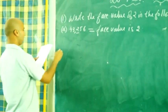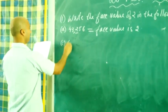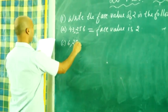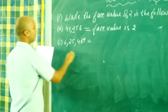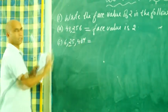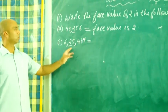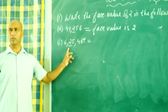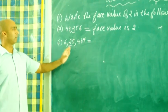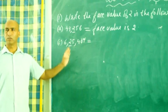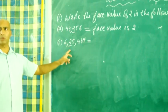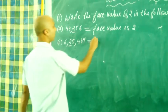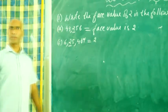Next one. 625,407. Here 2 is underlined. So 2 is in what case? In 10,000 space. So we have to write the face value. Don't see in which case, just see the number. The number is 2, so its face value will also be 2.